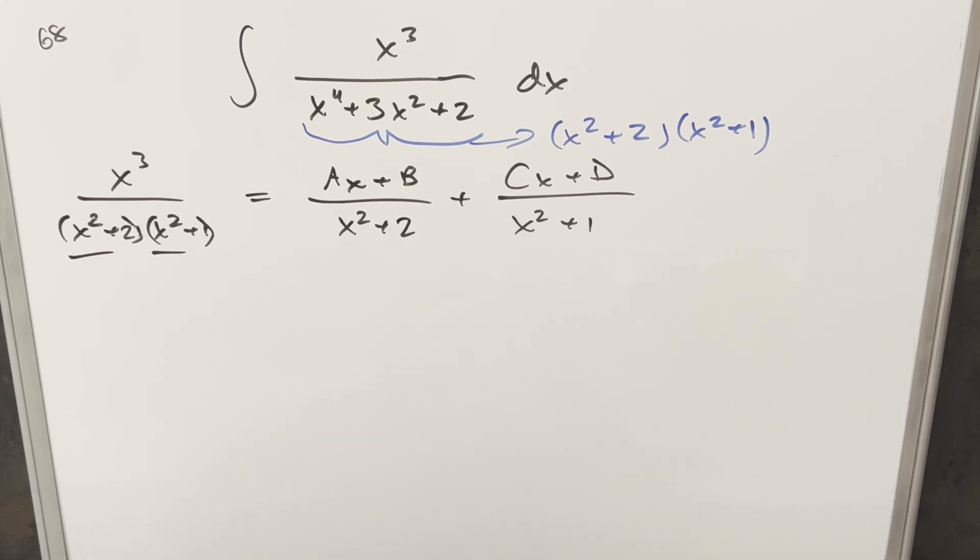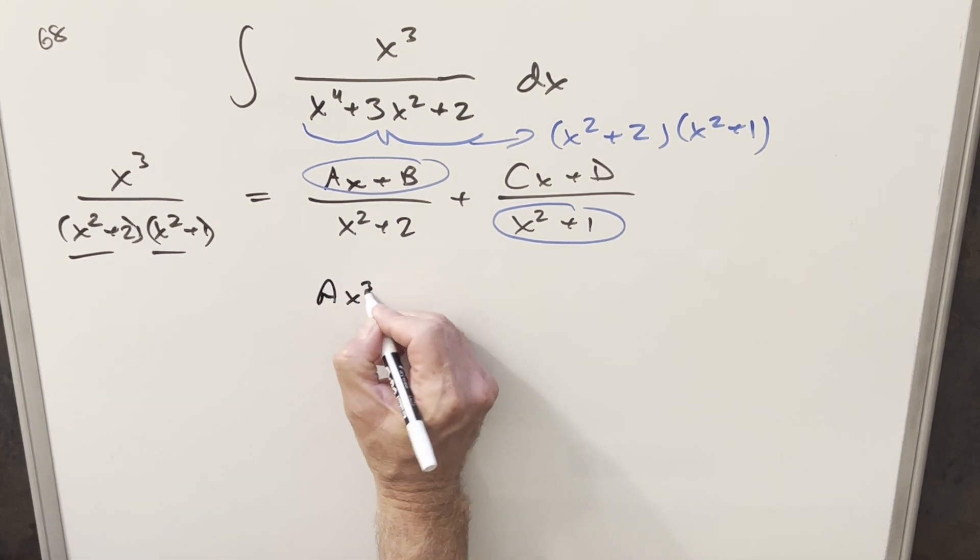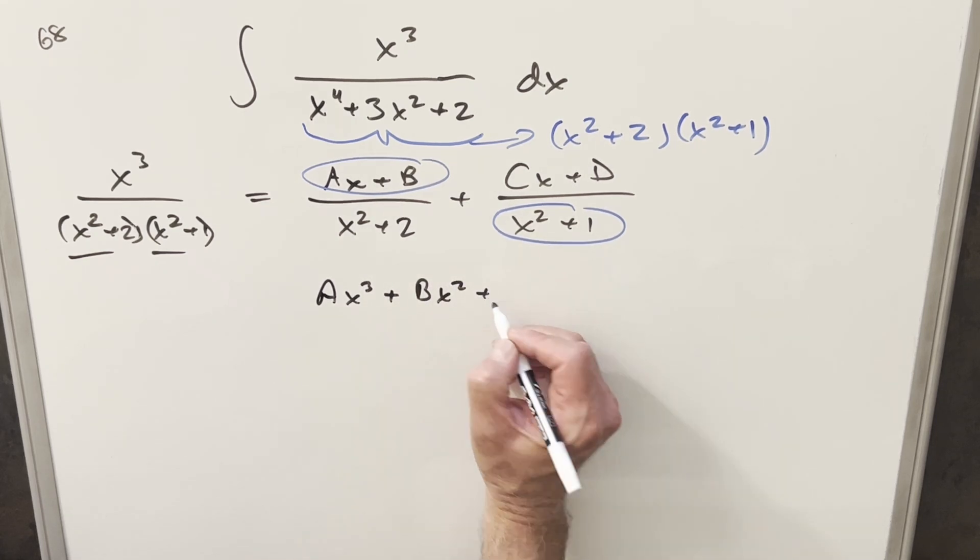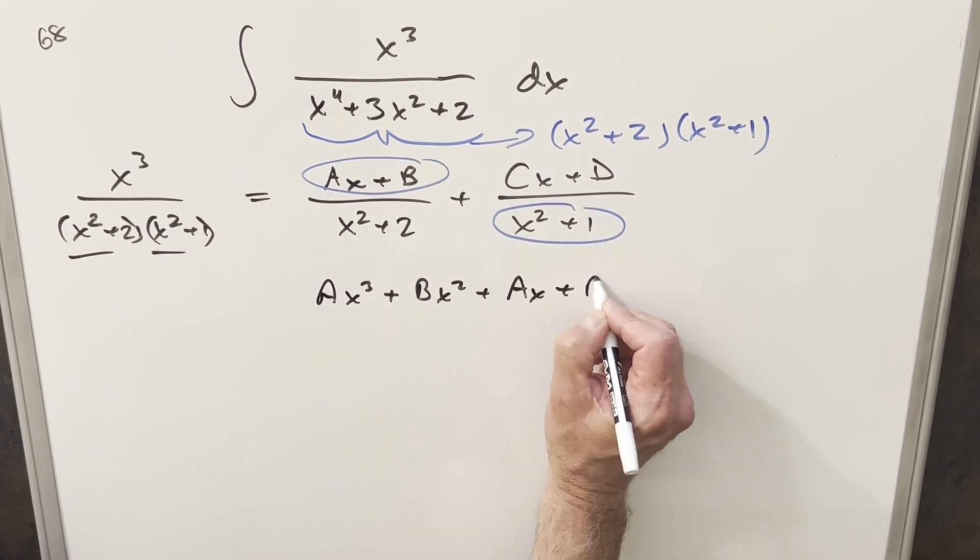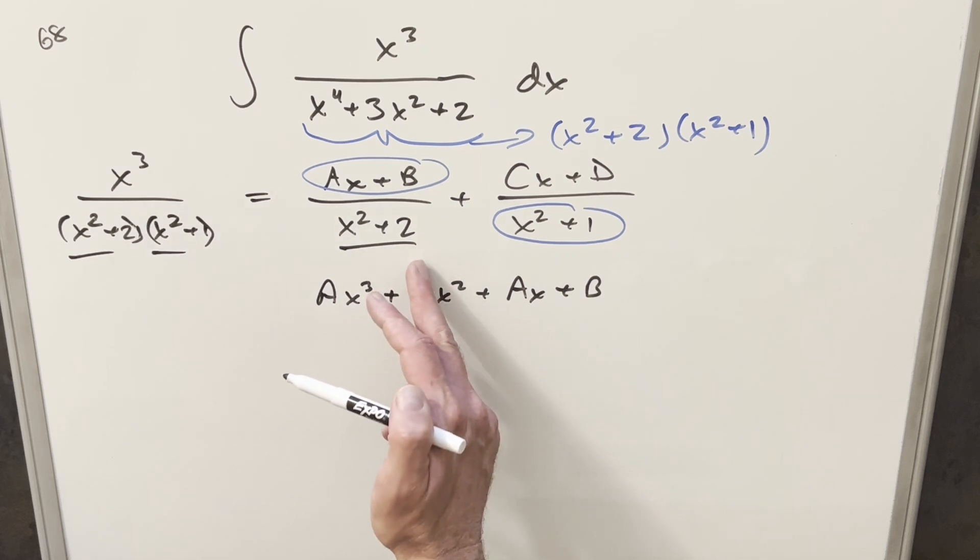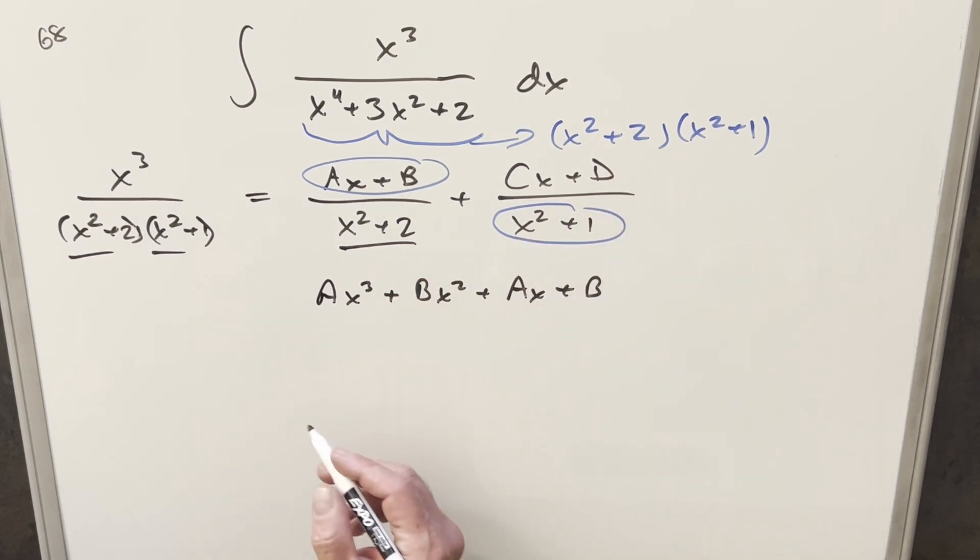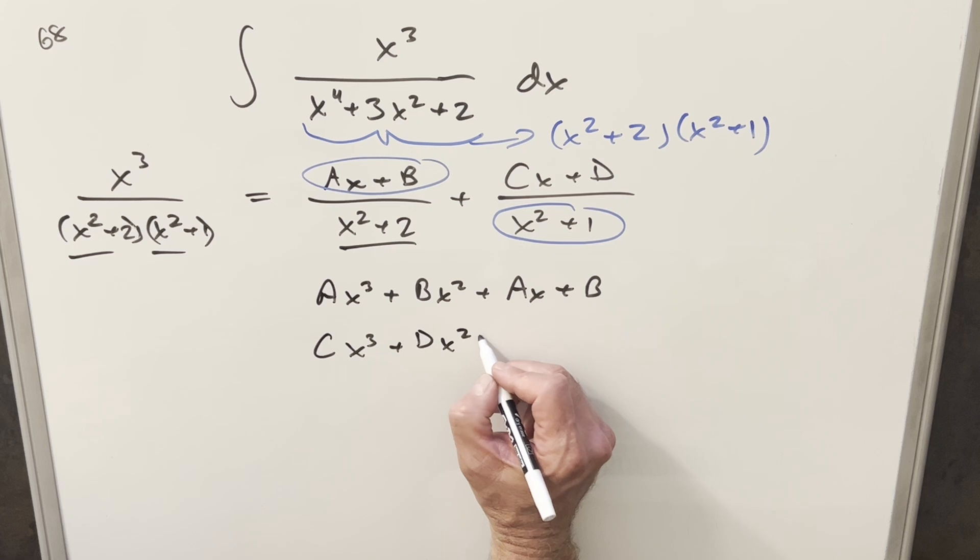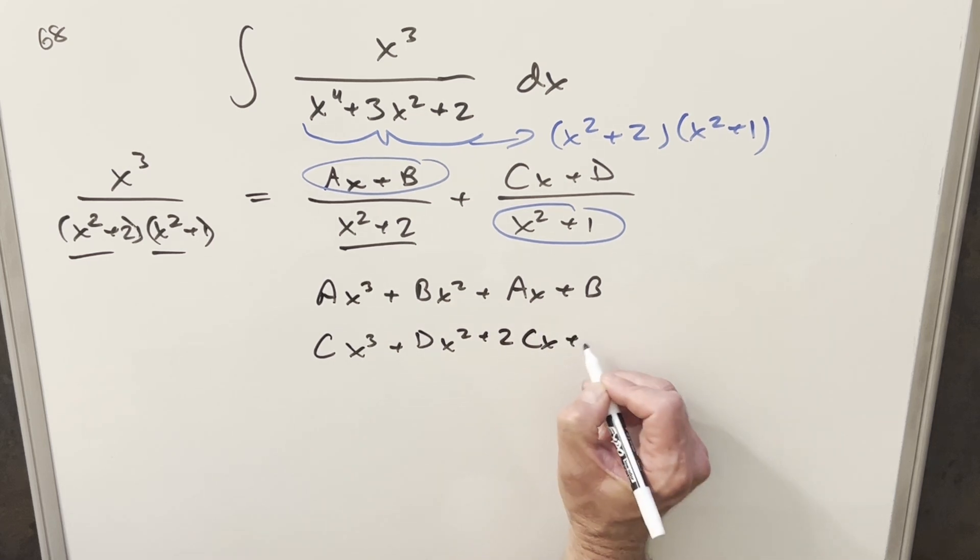And then if I just kind of do this out the long way, kind of getting a common denominator, I can multiply x squared plus 1 times our ax plus b here. And when we do that, we're going to have ax cubed plus bx squared plus 1 times x. That's going to be ax plus b. And doing the same thing here, multiplying x squared plus 2 times this part, we're going to have cx times x squared is going to be cx cubed. Then d times x squared will have dx squared plus 2cx plus 2d.